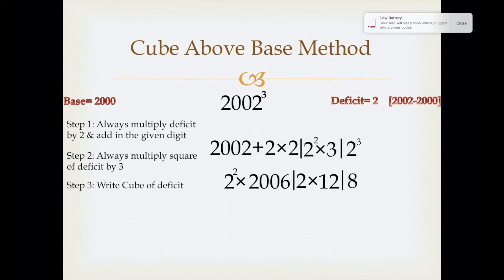When we solve this, it'll give us 8024 in the first step. And in the second step, it'll give us 24, but we have to write 024 because in the base 2000, there are three zeros. I am highlighting the base 2000. You can see there are three zeros and 24 was a two digit number. So I prefix 0 before 24 to make it a three digit number.